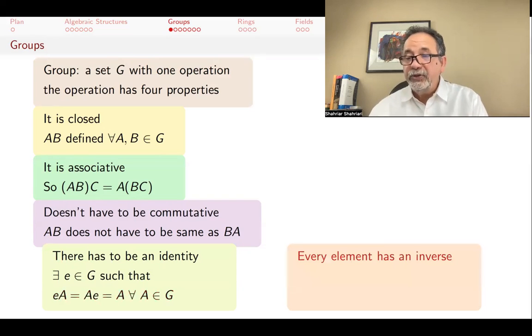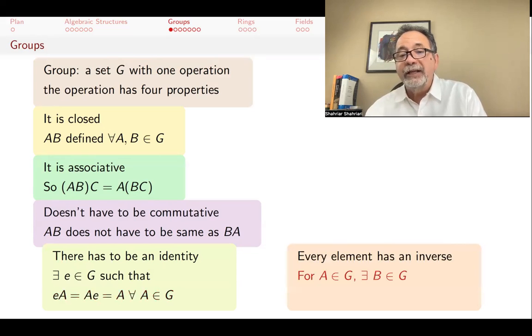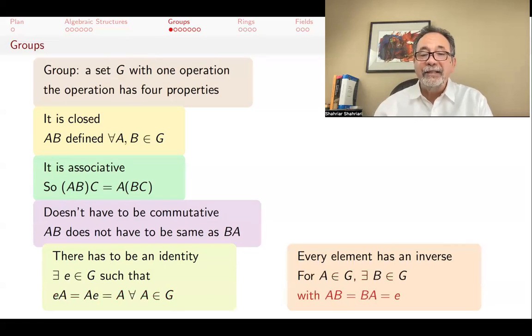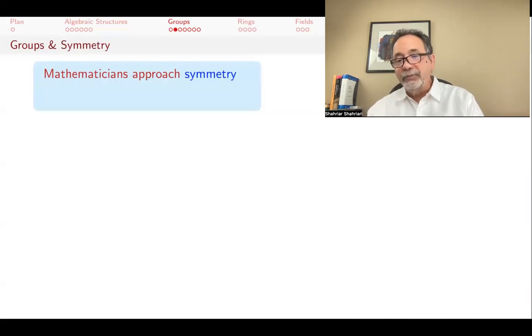Every element has to have an inverse. This means that for every element A, there's another element that when you multiply the two together, you get that identity. In the videos following this one, what we will do is that we'll go through many examples of groups before the abstract study of groups.